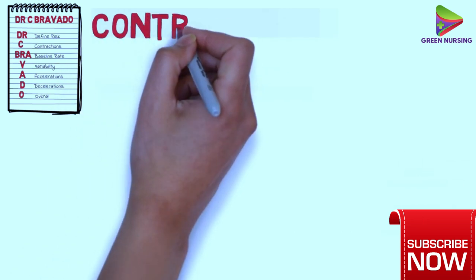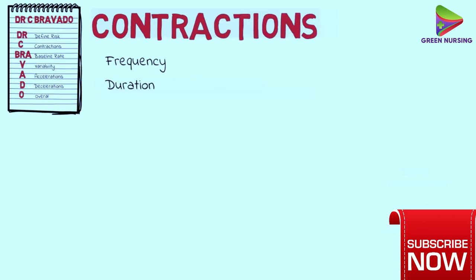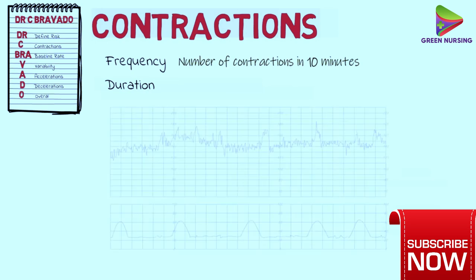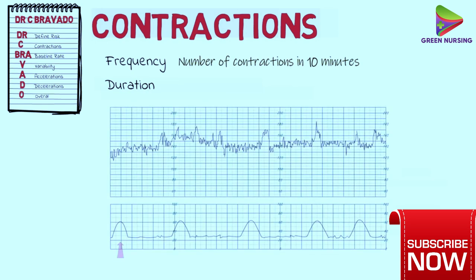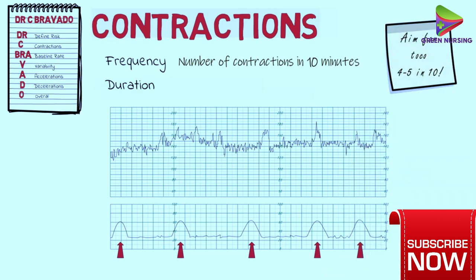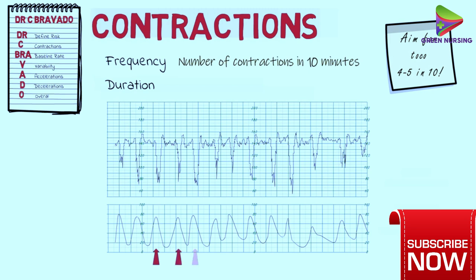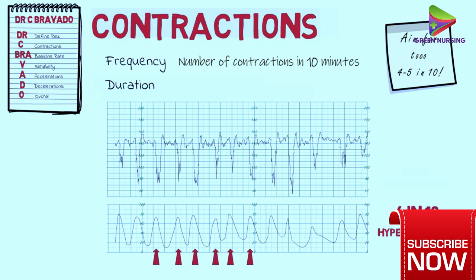Next, contractions. Here we are taking into consideration the frequency and duration of the contractions. The frequency is described as the number of contractions in a ten-minute period. The contractions appear as peaks on tachometry, as we can see over here. In this case, we would say that there are two in ten contractions. It is important to keep in mind that during labor, we should aim to have around four to five contractions in ten minutes. In this next CTG, we can see six contractions in ten minutes — this is called hyper-stimulation, which can result in an abnormal fetal heart trace on the CTG, as in this case.